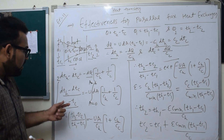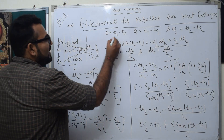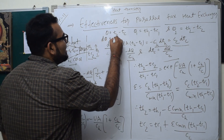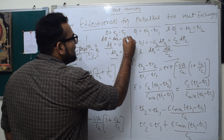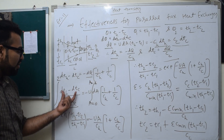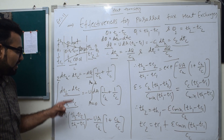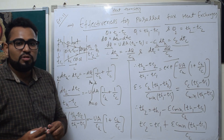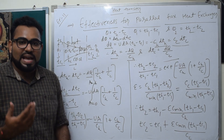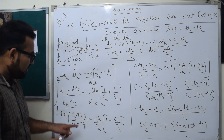We know that theta equals Th minus Tc, so d(theta) equals d(Th minus Tc). Substituting dTh and dTc in terms of dQ divided by Ch and dQ divided by Cc respectively, we can express d(Th minus Tc) in terms of dQ and the heat capacity rates.